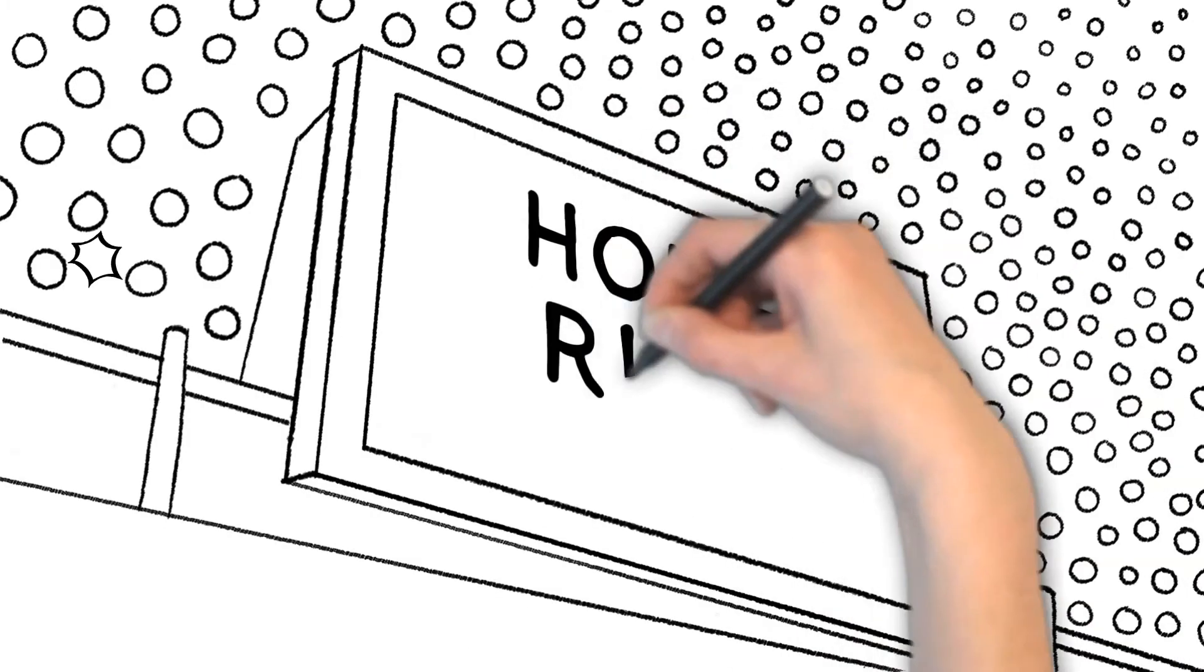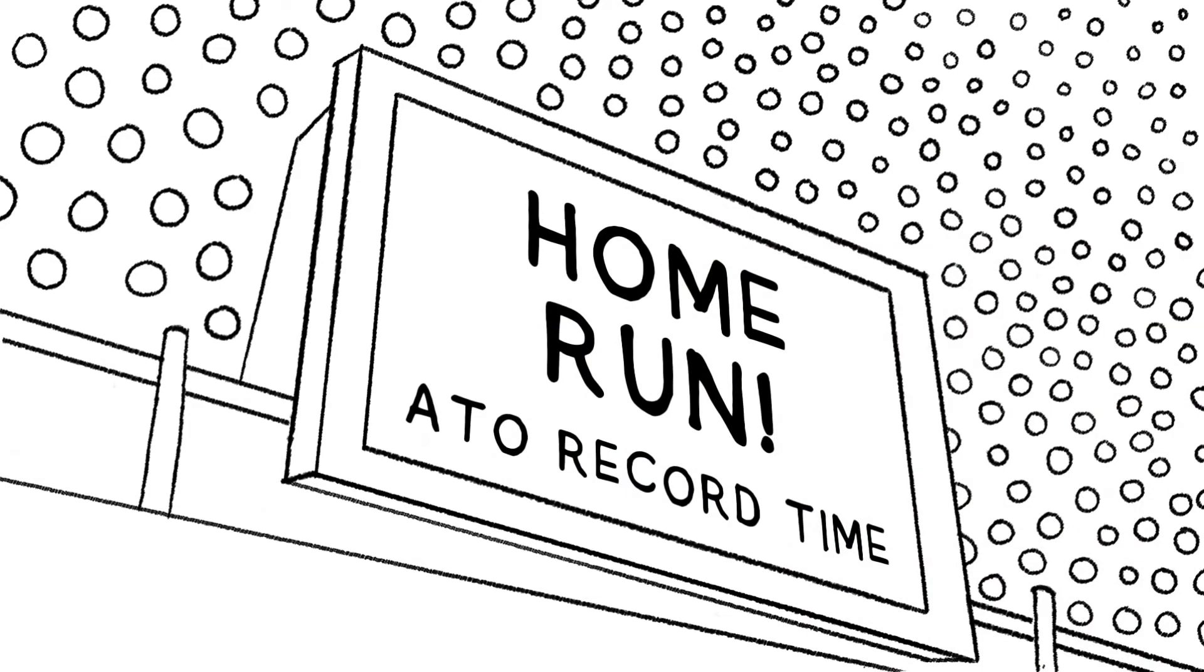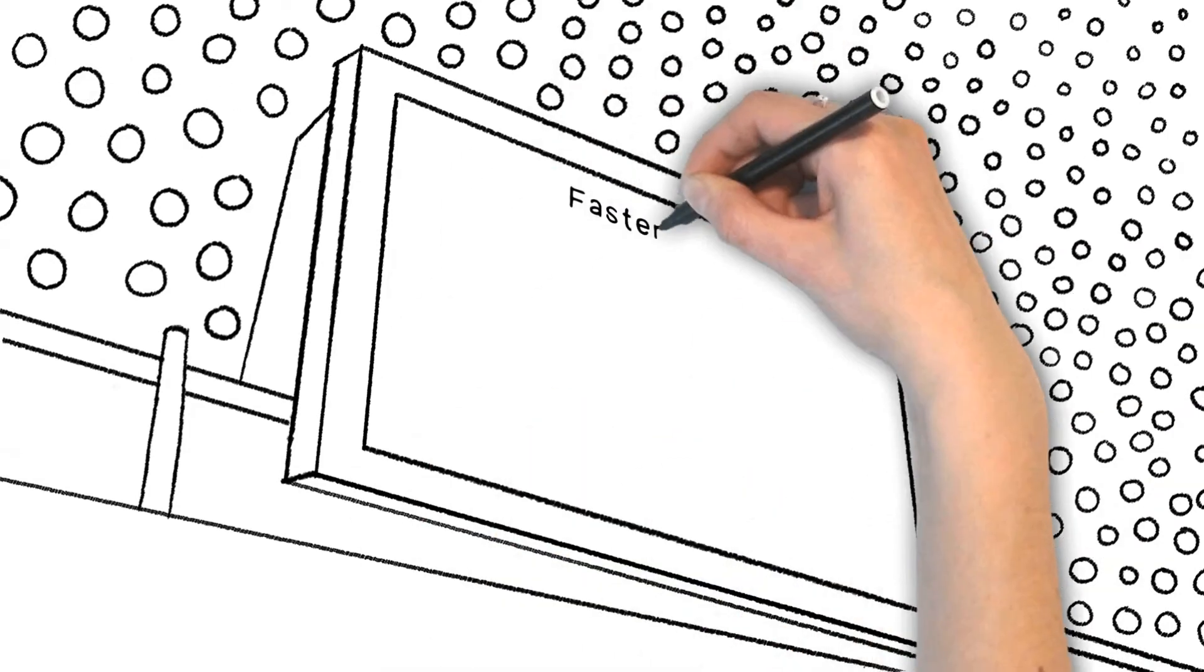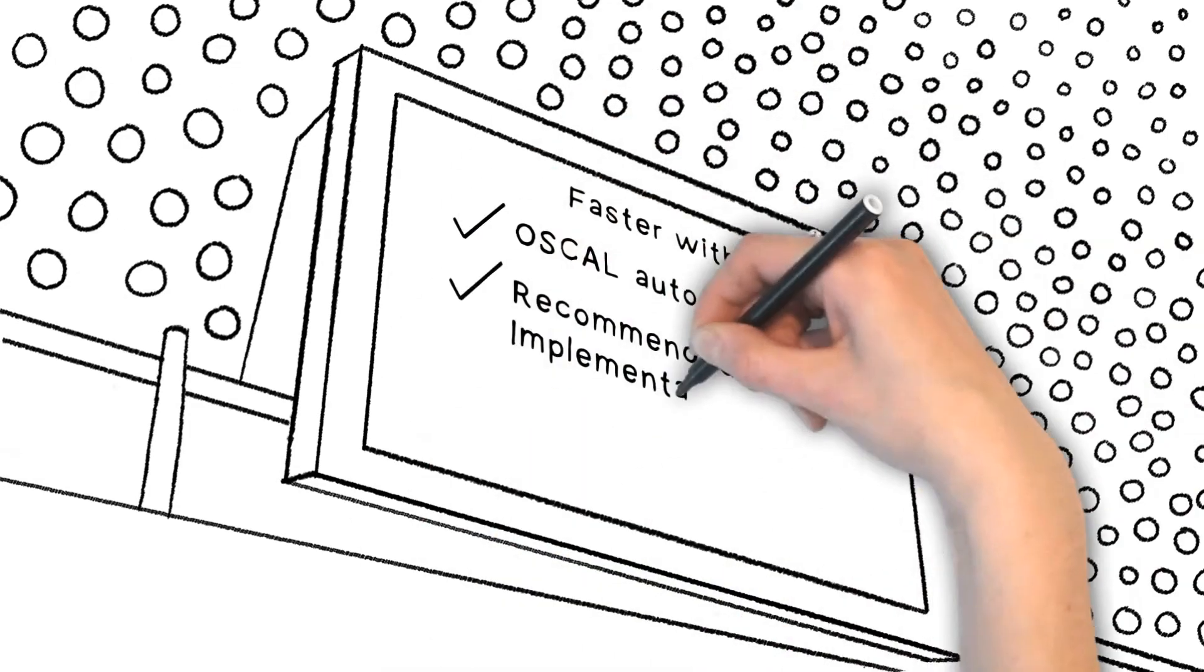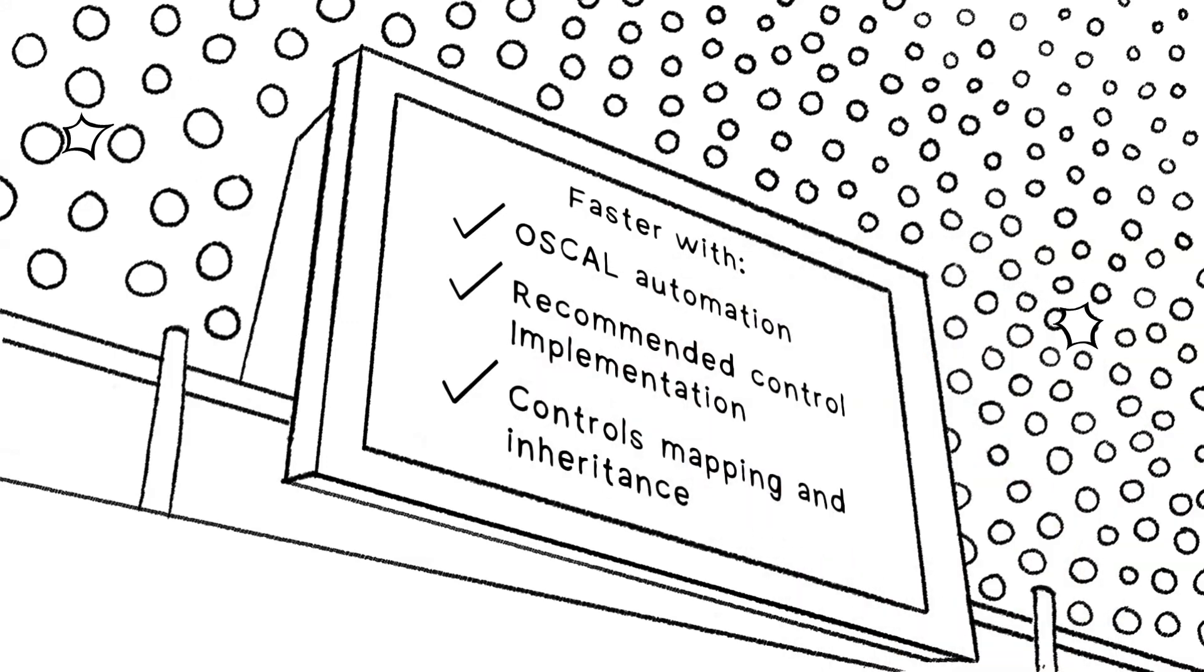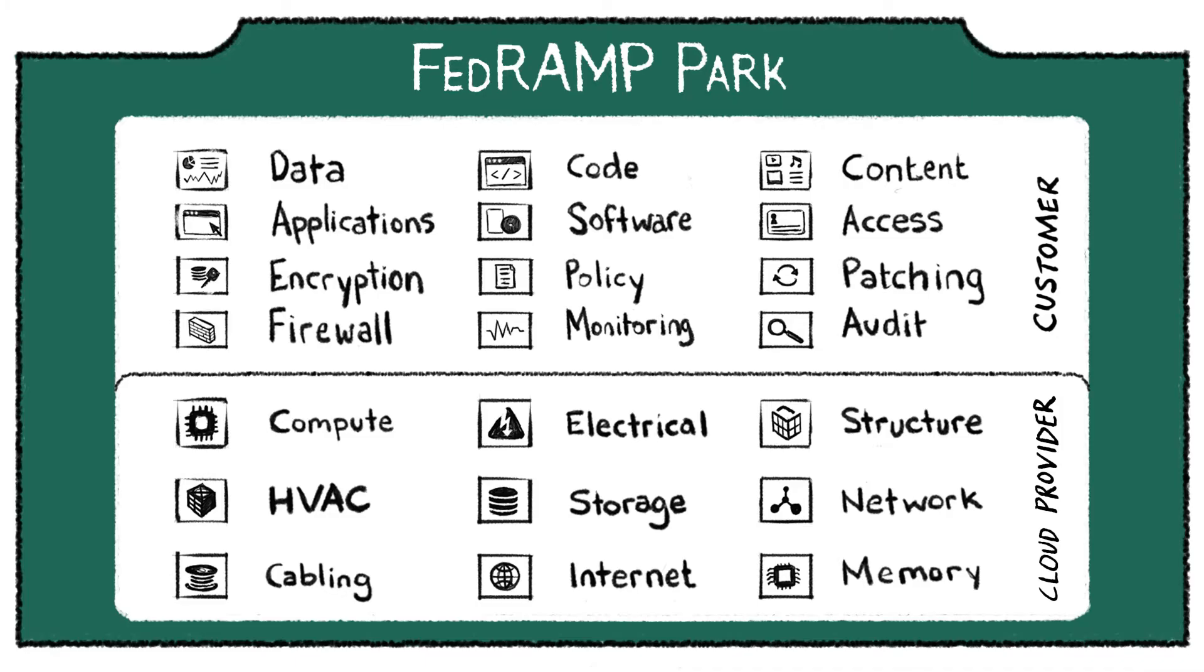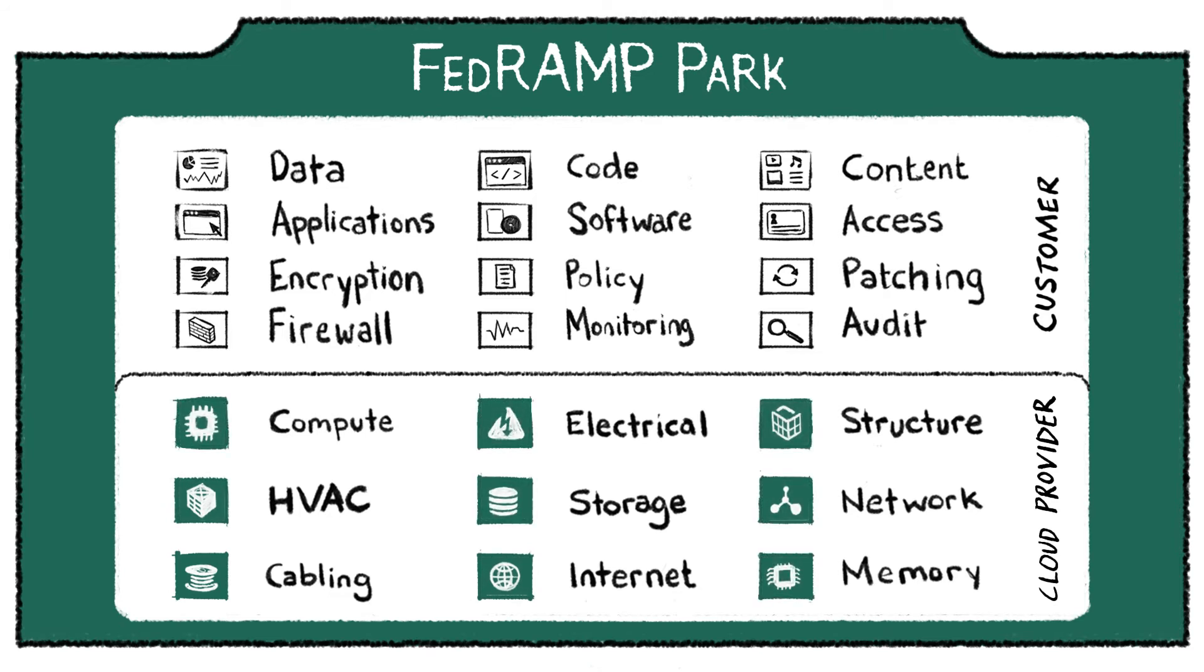Xacta can reduce ATO process times from months to just weeks, especially the grueling process of identifying, inheriting, and managing controls. Xacta automatically inherits security controls from your cloud host's infrastructure for faster control implementation and validation.